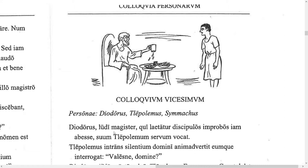Diodorus is the ludi magister — the teacher of the school — who is happy that the wicked, bad students are now absent. He calls his own slave Tlepolemus. Tlepolemus, entering, notices the silence of his master. Notice that 'intrans' with the ns ending is the nominative ending for a present participle. Our word 'present' comes from praesens, and English present participles always have -ing, so 'entering' here.